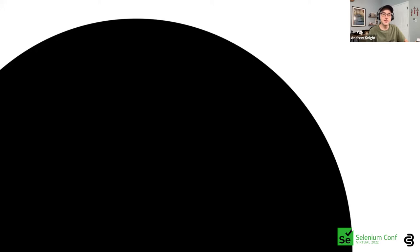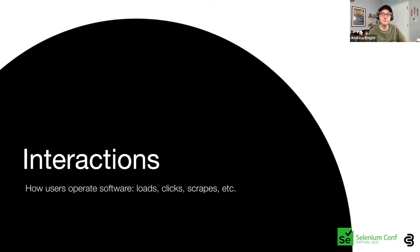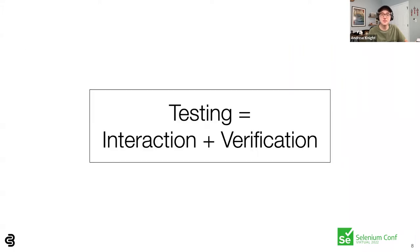Let's define that big 'I' word I keep tossing around: interactions. Simply put, interactions are how users operate with the software. For this talk, I'll focus primarily on web UI interactions like clicking buttons and scraping text. Interactions are indispensable to testing. The simplest way to define testing is interaction plus verification. You do something and you make sure it works. Think about any functional test case you've ever written or executed — each step had interactions and verifications.